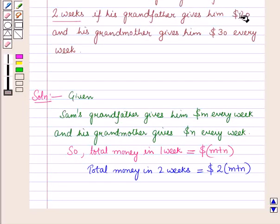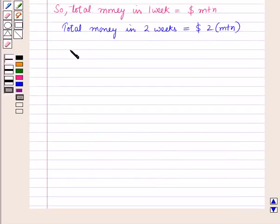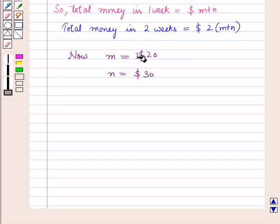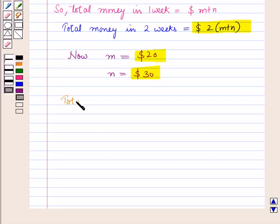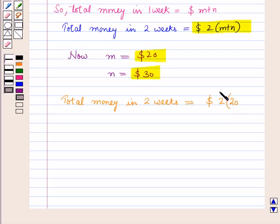Now his grandfather gives him 20 dollars and his grandmother gives him 30 dollars every week. So we have M is equal to 20 dollars and N is equal to 30 dollars. Now we will put the values of M and N in this expression. So the total money in 2 weeks will be equal to 2 into M, which is 20 dollars, plus N, which is 30 dollars.